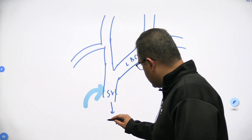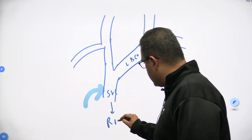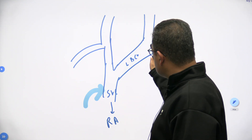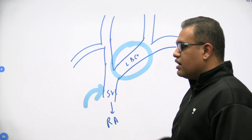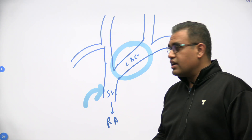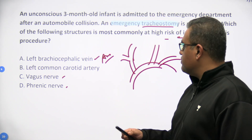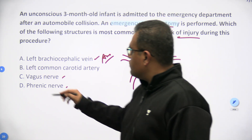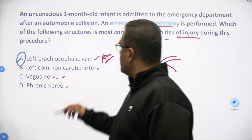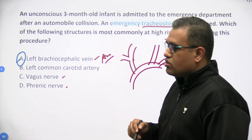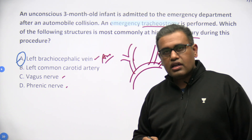This left brachiocephalic vein crosses in front of the trachea as well as the branches of the arch of aorta — probably the brachiocephalic trunk and the other vessels. These two brachiocephalic veins join to form the superior vena cava, where we have the opening of the azygos, that is the arch of azygos, and finally it pierces the pericardium to open into the right atrium. Therefore, this structure crosses the midline from left to right side, making it the better answer — option A — while doing a tracheostomy on a three-month-old infant.